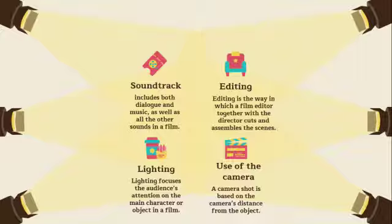A camera angle is how the camera is tilted while filming. Straight-on angle: the camera is at the same height as the object. High angle: the camera is filming from above the object. Low angle: the camera is looking up at the object. Oblique angle: the camera is tilted sideways.